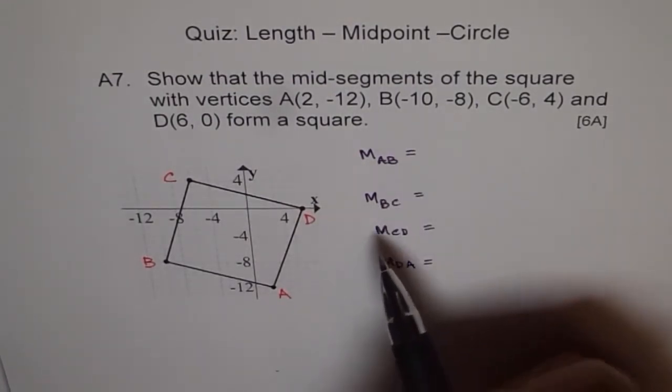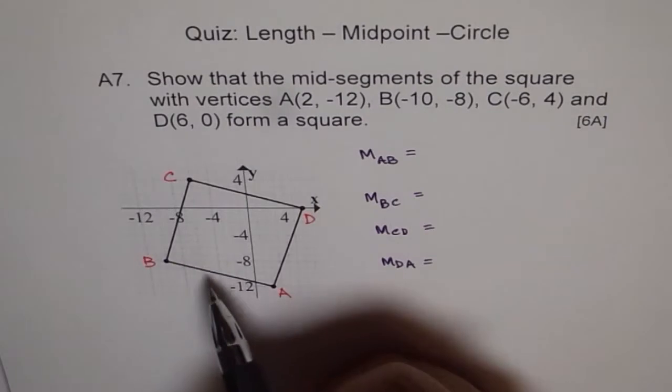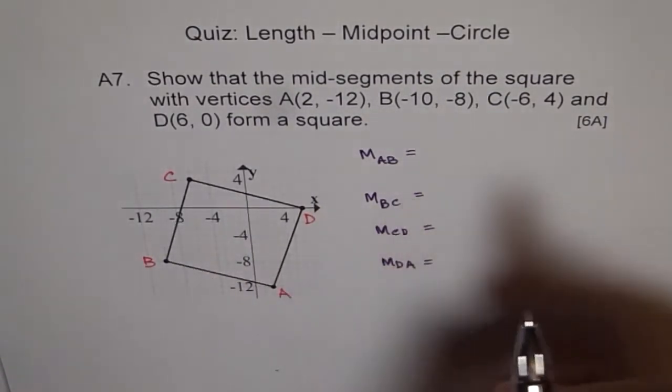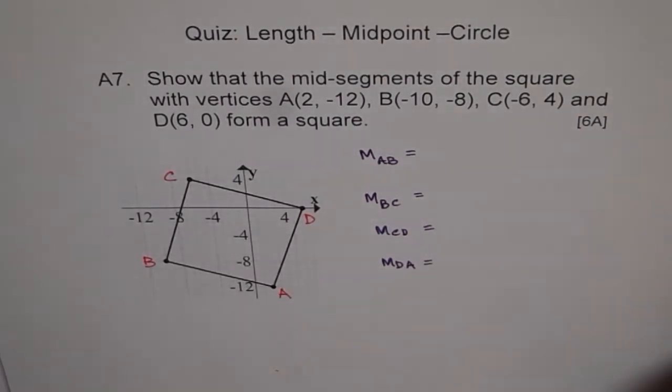They form a square. That means once you have those midpoints, you find the distance between the two, and show that the distances are the same. That is how you are going to do the problem.